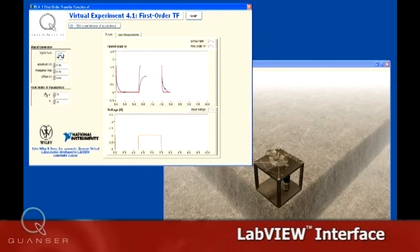This is achieved by applying a step voltage to the motor and alternating between low and high voltages within the control design software.